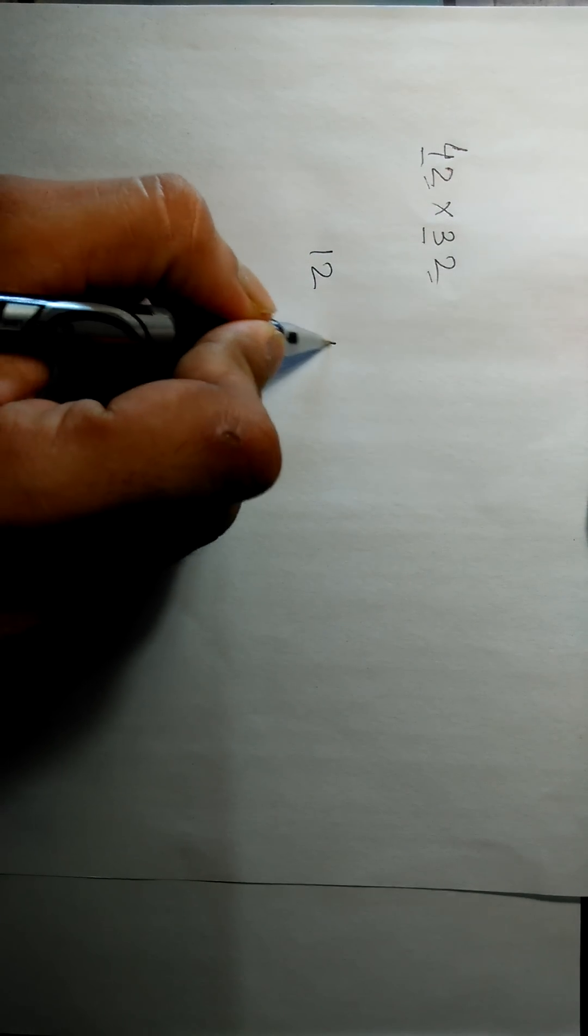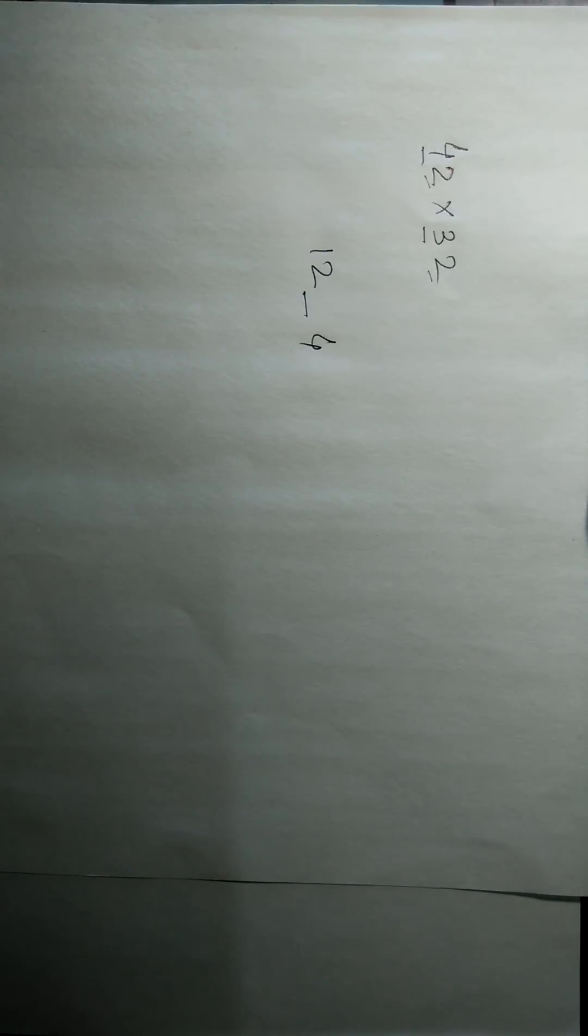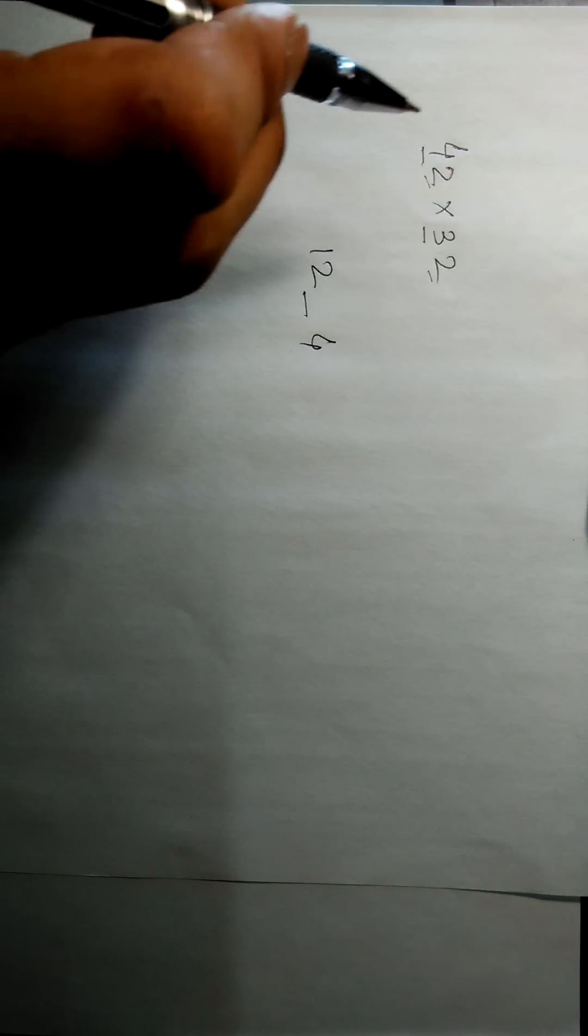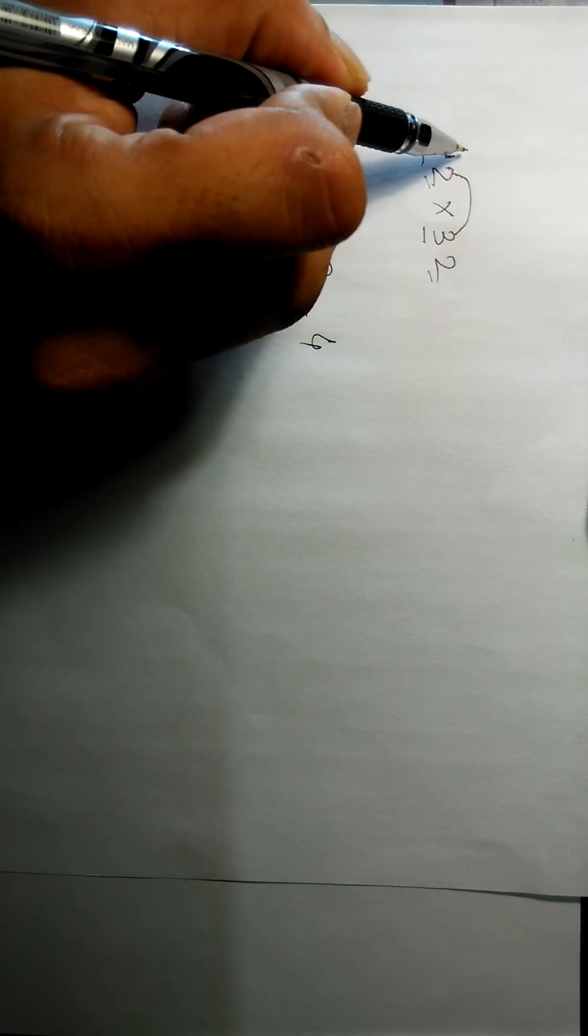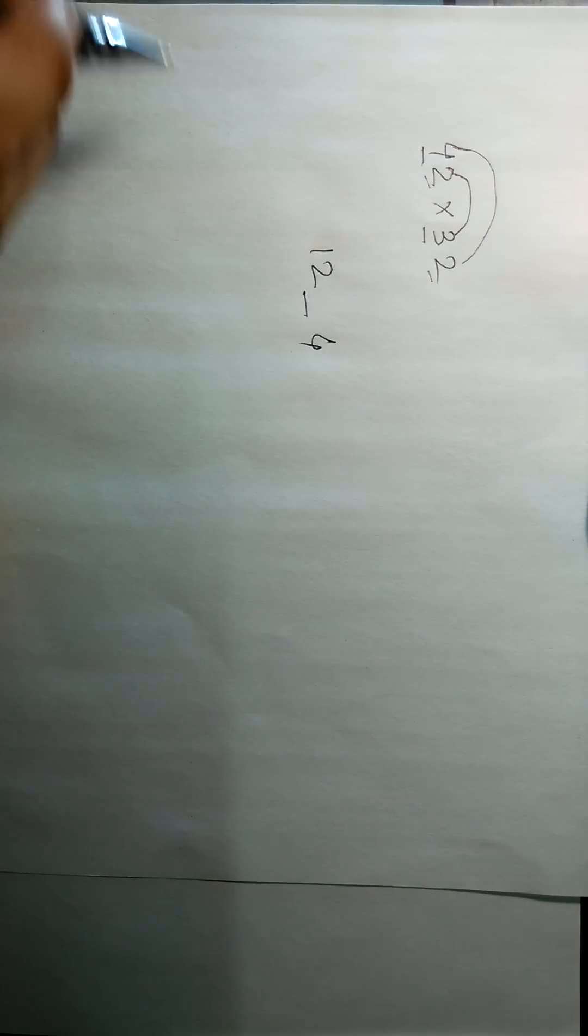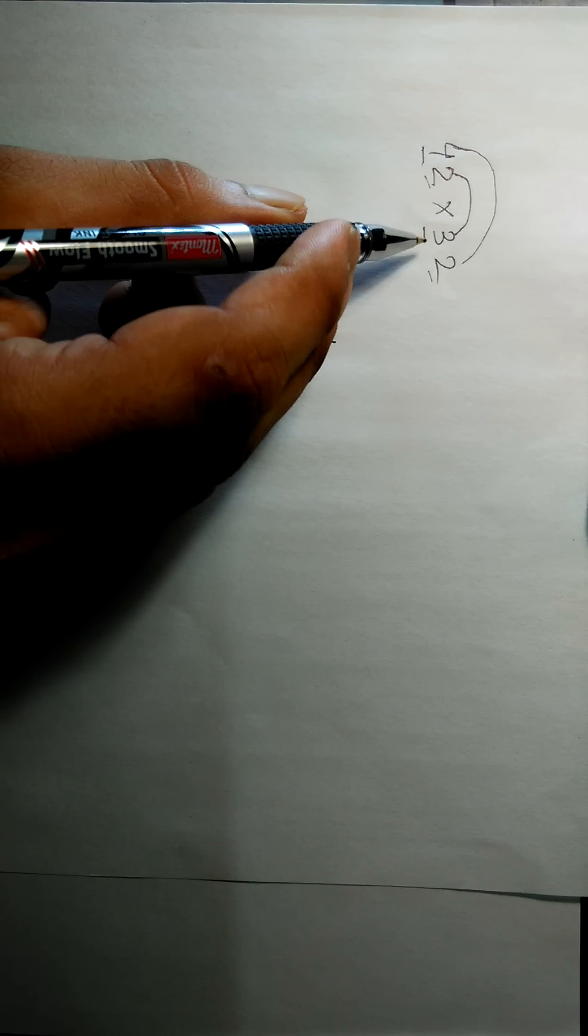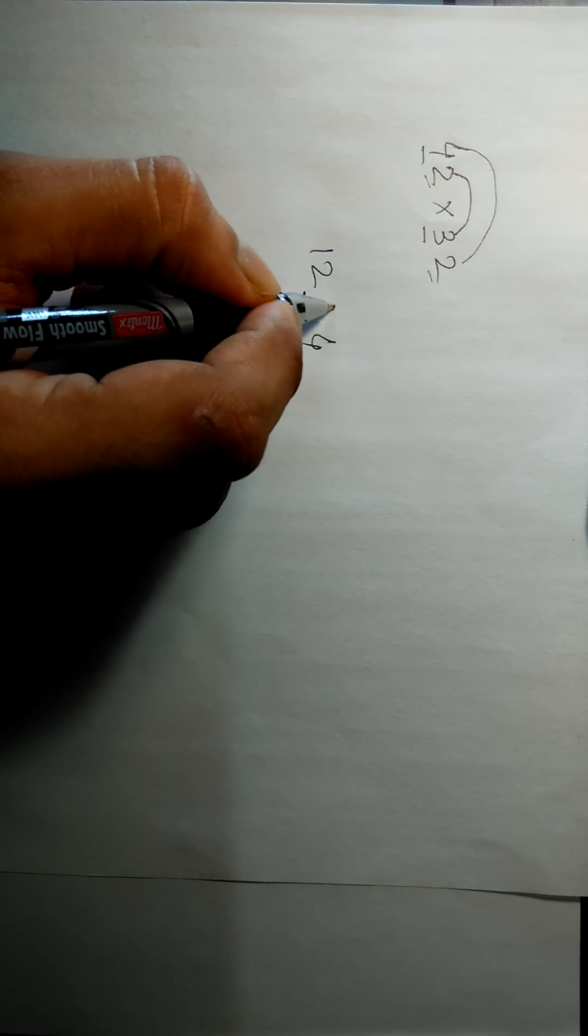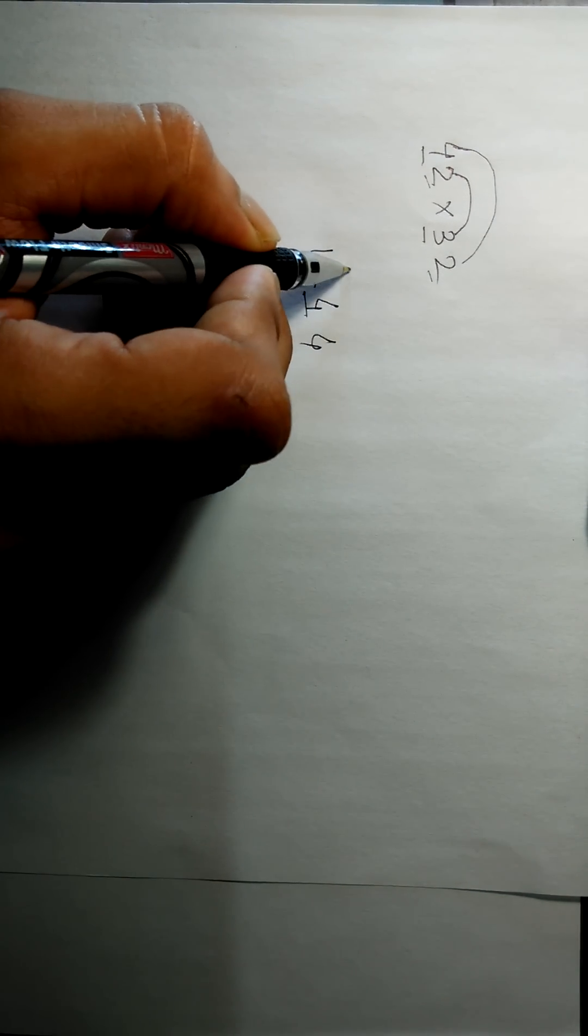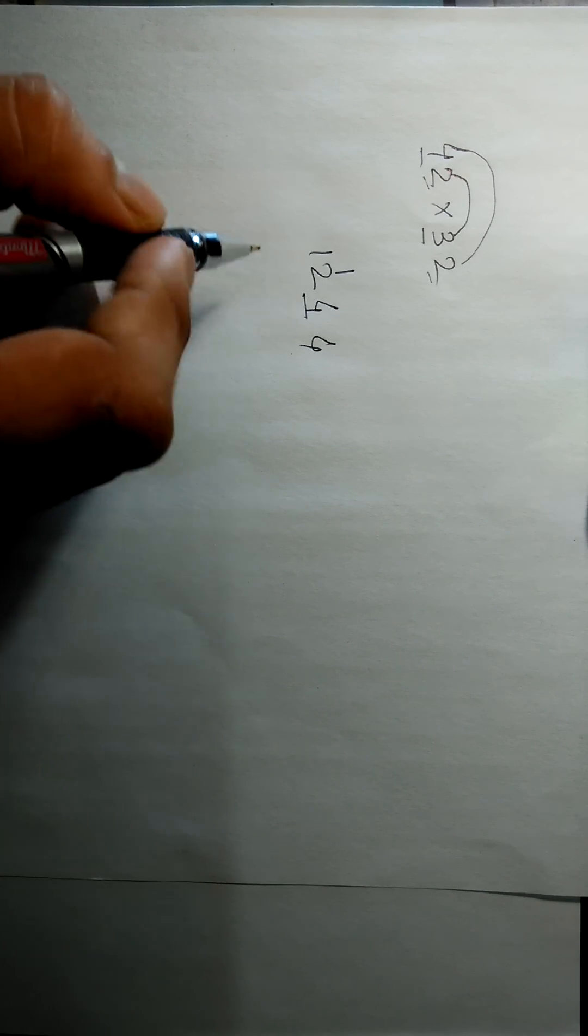Put a blank here. To get the digit in the blank, we have to multiply 2 and 3, and then add with the multiplication of 4 and 2. That is, 2 times 3 is 6 plus 4 times 2 is 8. 6 plus 8 is 14, so we will write 4 here and 1 here. Add this 1 to 12, that is 13. So 1344.